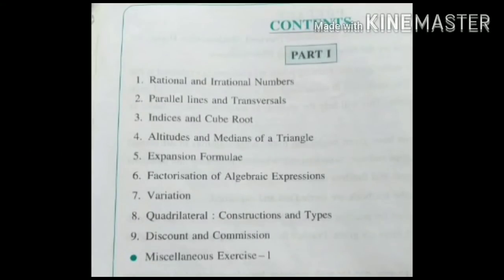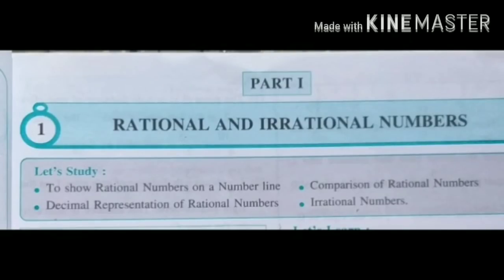Dear students, your eighth standard textbook has divided into two parts, part 1 and part 2. Let's see the contents of part 1. There are total nine chapters in part 1. Today we will learn the first lesson: rational and irrational numbers. In this lesson, we will study the definition of rational numbers, how to represent the rational number on a number line, and comparison of rational numbers.